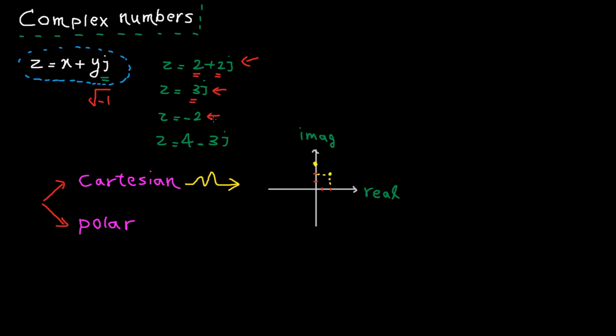Another example: the real part is minus 2 and the imaginary part is 0. And the last example: the real part is 4 and the imaginary part is minus 3.